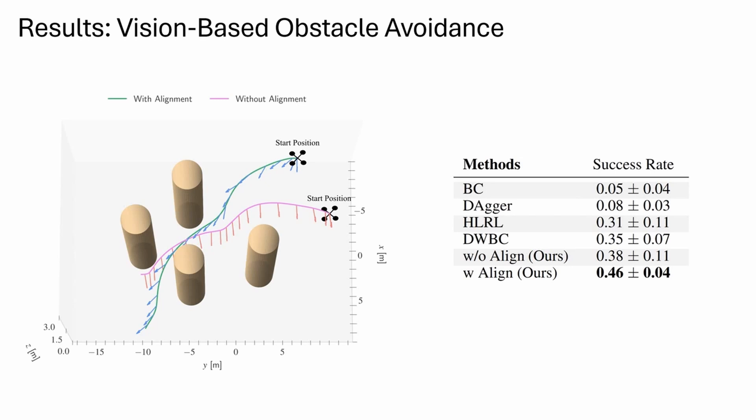Additionally, we evaluate our approach on the complex task of agile quadrotor control, in which a quadrotor needs to follow a constant velocity command while avoiding obstacles. The teacher policy receives the relative distance to each obstacle. In contrast, the vision-based student policy replaces obstacle positions with inputs from an RGB camera with a limited field of view.